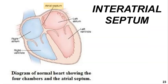The interatrial septum, which was not visible in previous diagrams, is shown here. It is the wall that separates the right atrium from the left atrium, and this helps to prevent the mixing of the oxygenated blood in the left atrium with the deoxygenated blood in the right atrium.